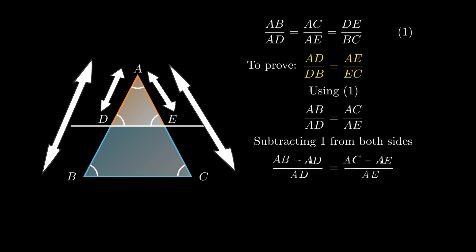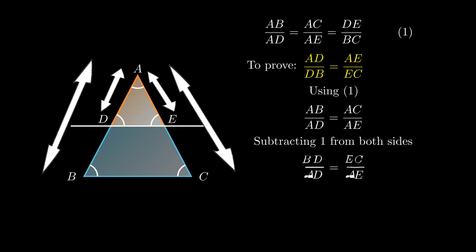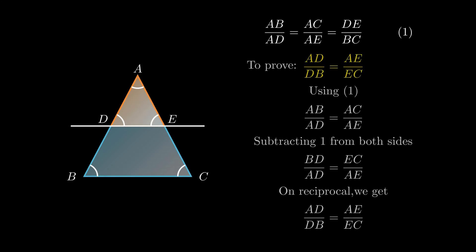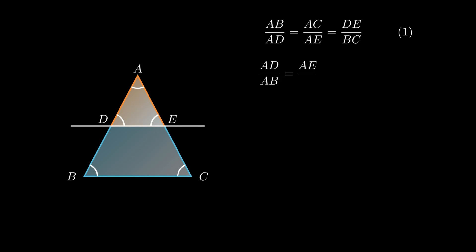On subtracting one from both sides we get AB minus AD upon AD equals AC minus AE upon AE, which simplifies as ratio of BD and AD equals ratio of EC and AE. On taking reciprocal on both sides we get ratio of AD and BD equals ratio of AE and EC. Hence the theorem is proved.